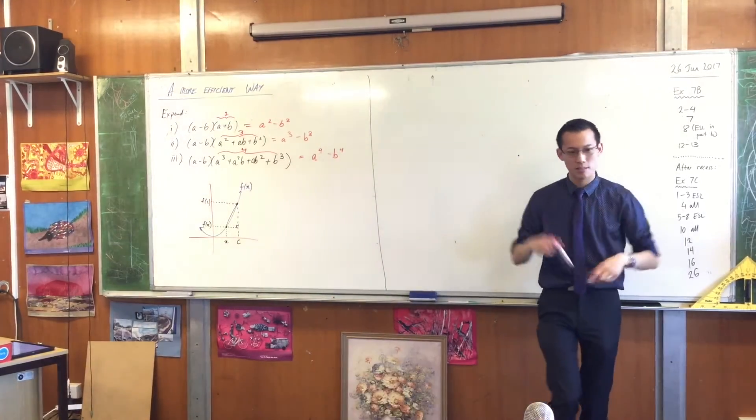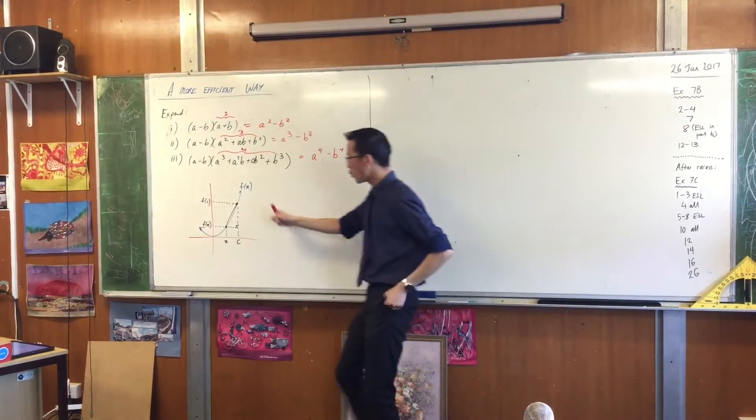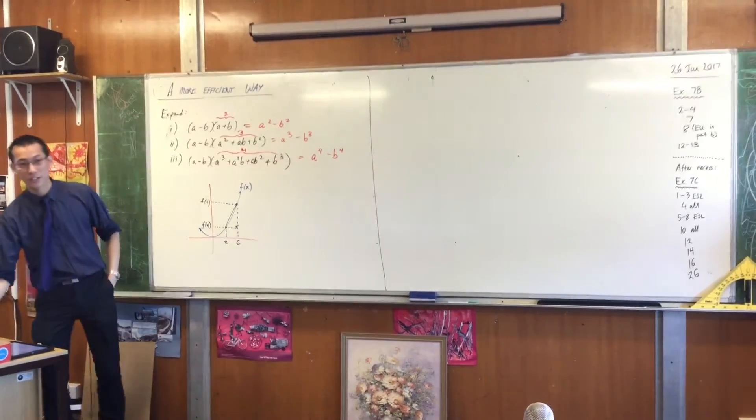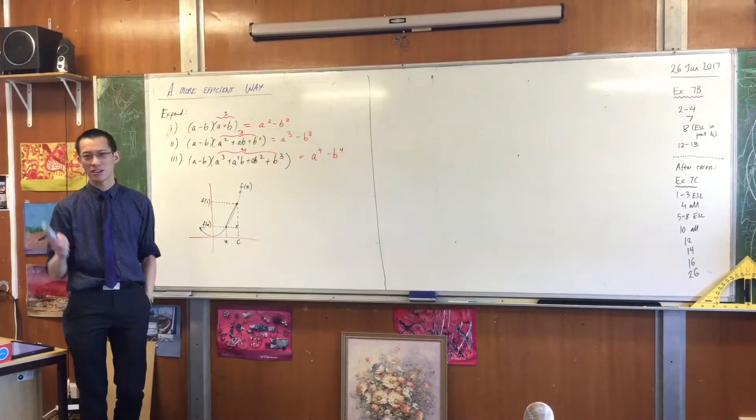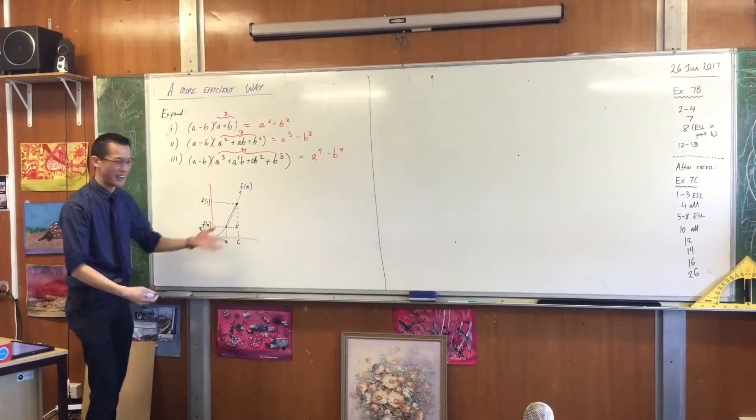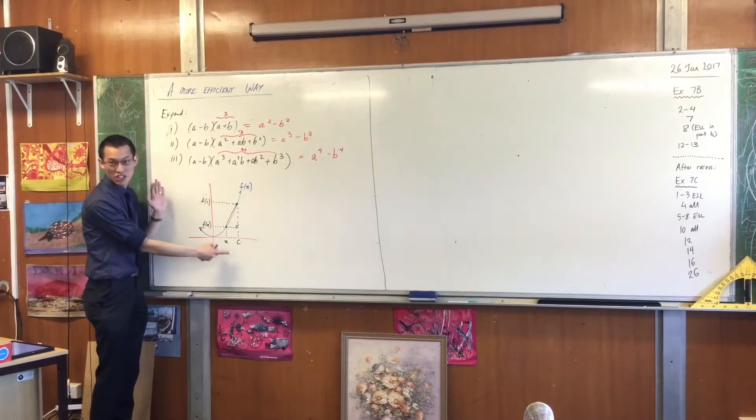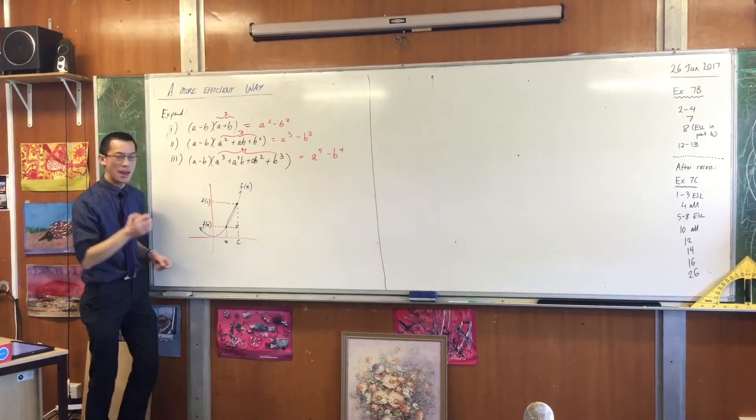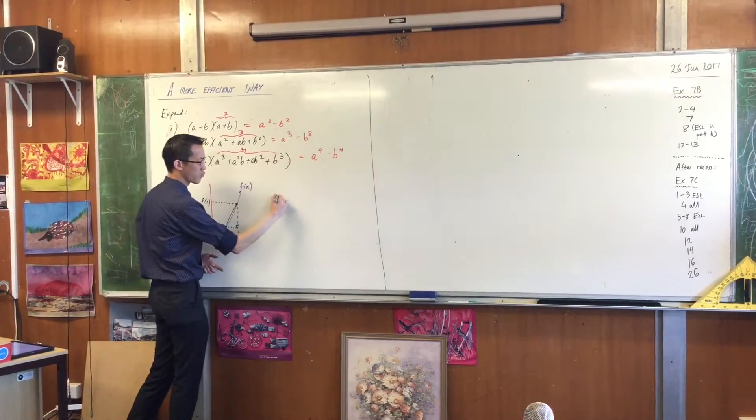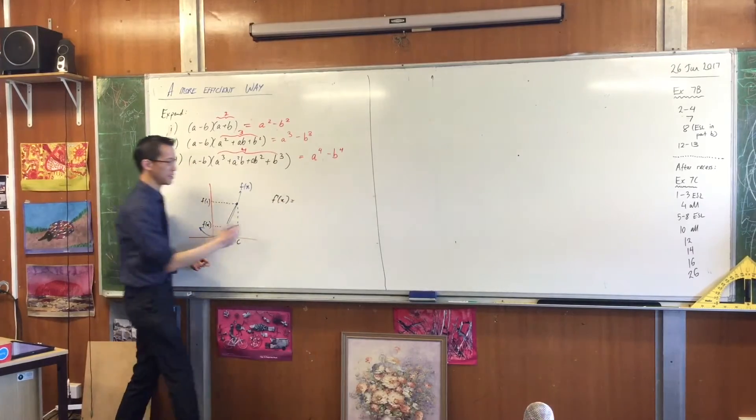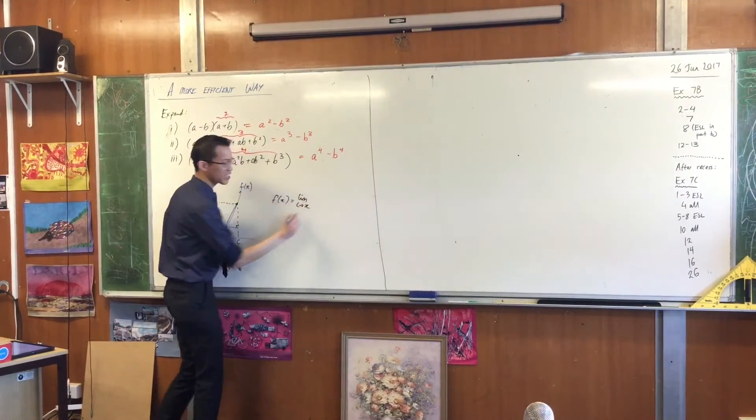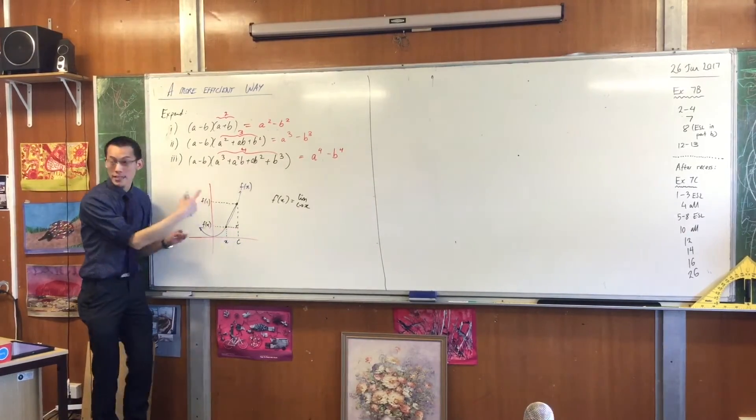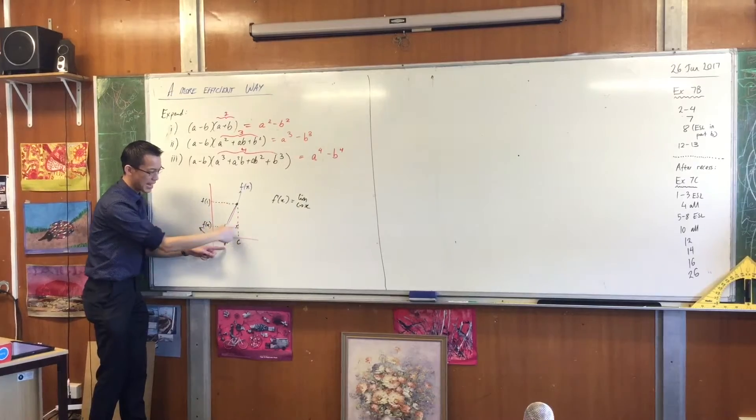Now, at the beginning of this double lesson, I introduced you to a different way of writing the definition of first principles without H's. Instead, and I'm going to ask you to write this down, because as I was walking around to some of you, you didn't have it, so I'm going to point it out to you again. If I think about, instead of H's, an X and a C, another coordinate that is nearby, then I can write the derivative, the gradient function as the limit as C gets closer to X. Do you see it's the same idea? H getting closer to zero is the same as C sort of climbing down to get to X.